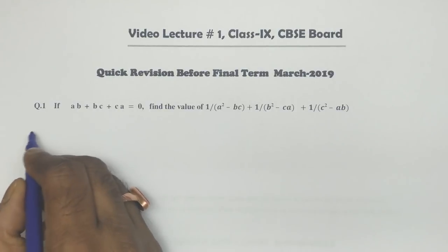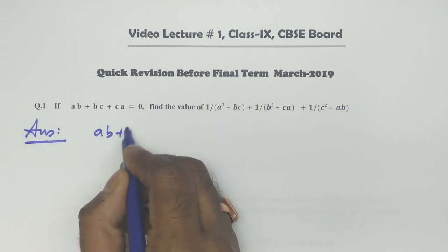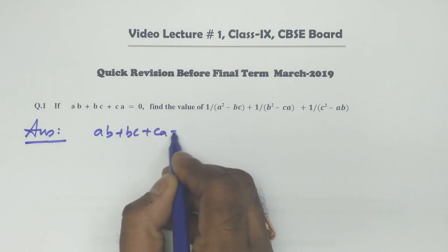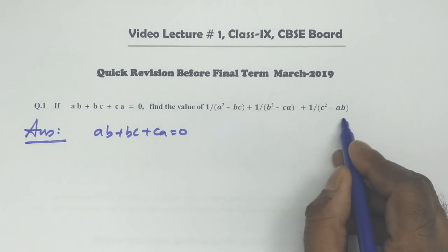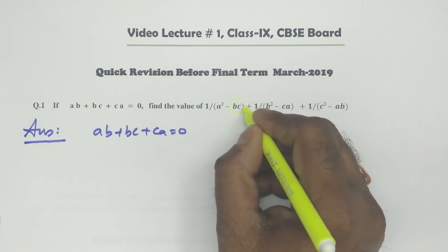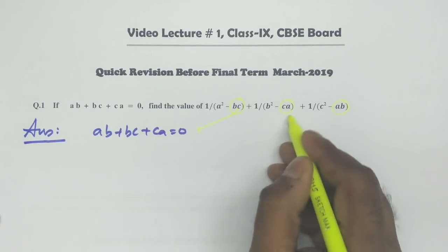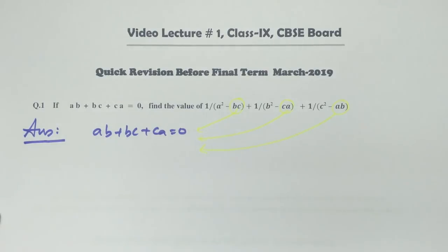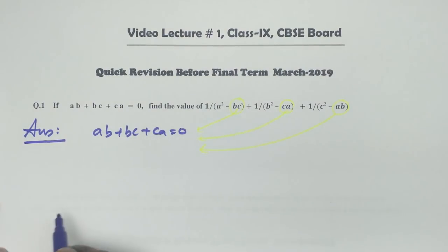Dear students, the very first question: it is given that AB plus BC plus CA equals zero, and you have to find out the value of a certain expression. Now essentially you must look for a shortcut — there are BC, CA, and AB, and I can make out each of these values from this condition. Let's see how it happens.